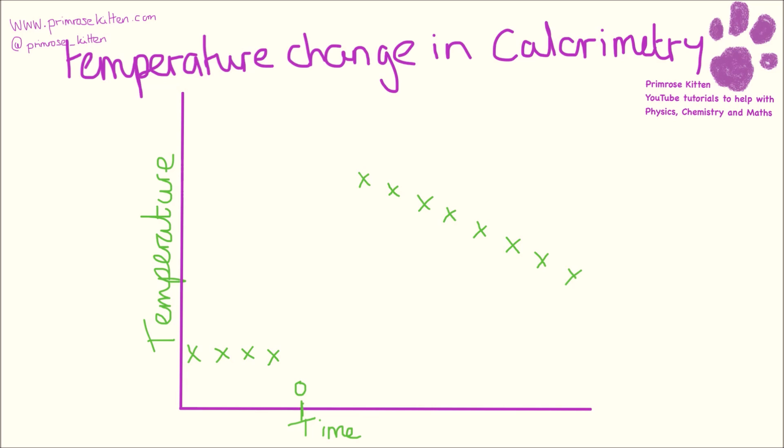you want to know the total temperature change, so the highest temperature that it got to. So what you need to do is take your dots over this side, draw a line through them. Obviously you've got to do this with a pencil and a ruler.